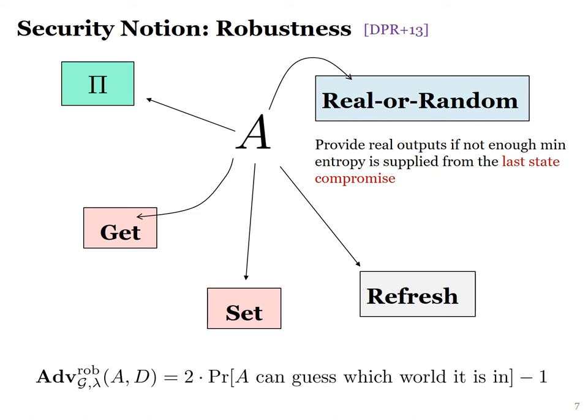The adversary, however, doesn't control the random inputs. Finally, adversary A is possibly given a real-or-random oracle that provides either the real outputs of the RNG or random strings of the same length. This oracle would provide real outputs if not enough min-entropy is supplied since the last state compromise. We define the advantage of adversaries A and D as the normalized probability that A can guess correctly whether it receives real outputs of the RNG or random strings.